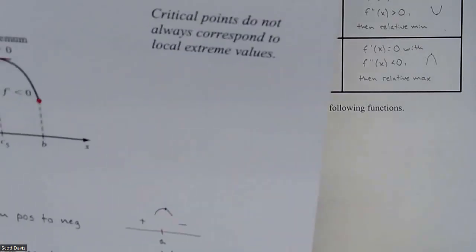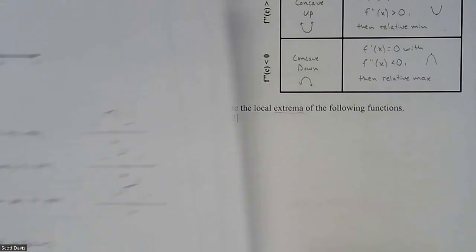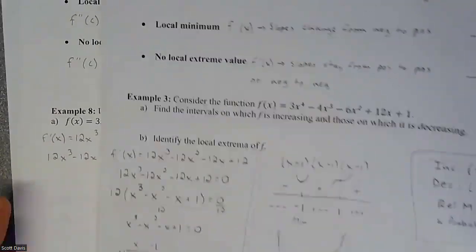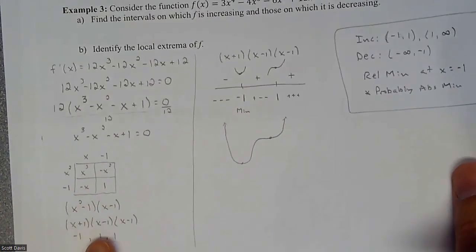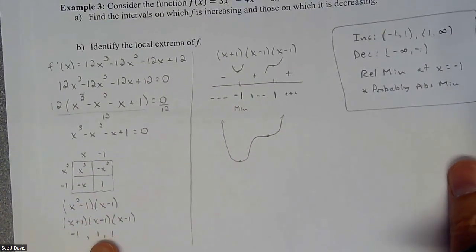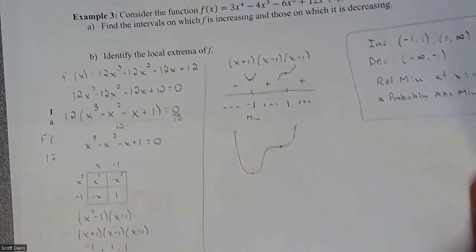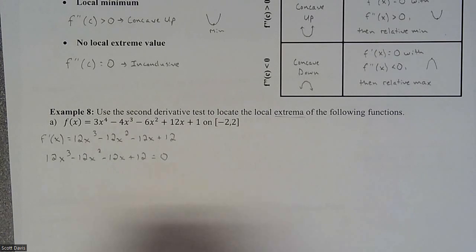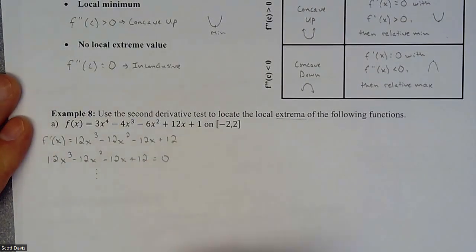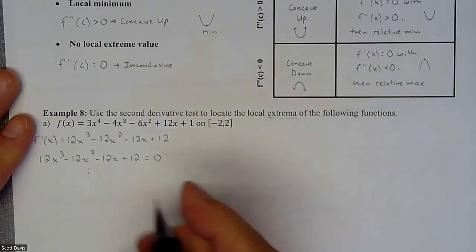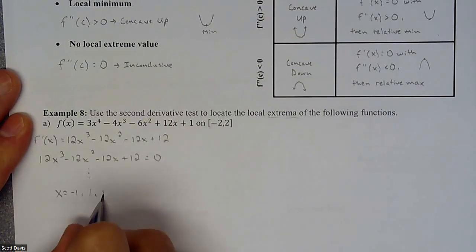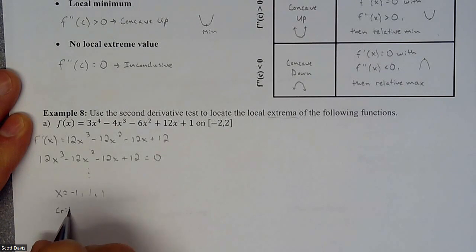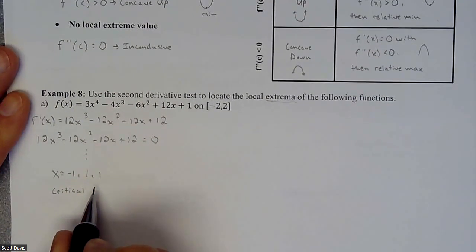We set the derivative equal to zero to find our critical numbers. We factored the expression — we worked through that on a previous example — and our critical numbers came out to be negative one, one, and one. So those are the x-values where our slope is zero.